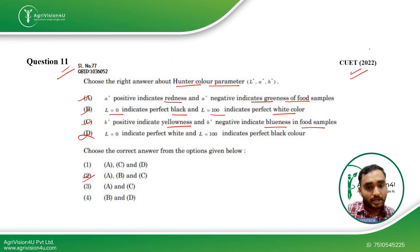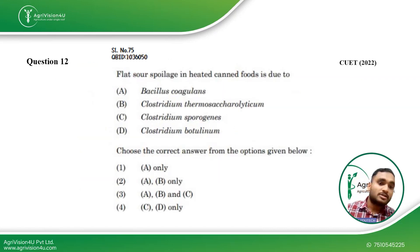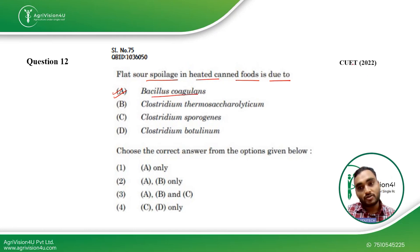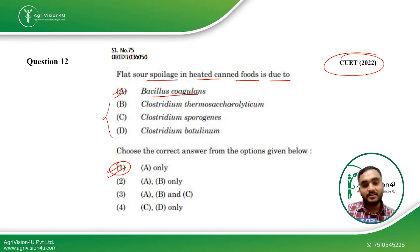You can see that these questions are not concentrated on a specific topic — they come from the depth of all chapters discussed in class. Coming to Question 12: flat sour spoilage in heated canned foods is due to Bacillus coagulans. This is straightforward — we discussed this in microbiology class. Only option A is the right answer, as the other options are not related to flat sour spoilage in heated canned foods. This question was also asked in CUET 2022.